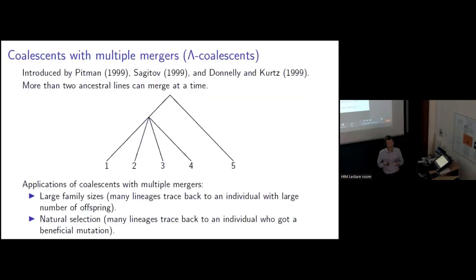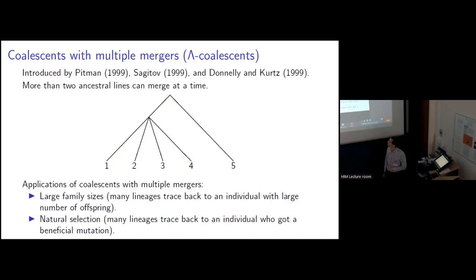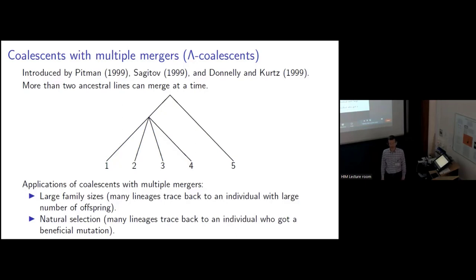Now, Kingman's Coalescent describes the genealogy of populations under a wide range of circumstances. But in other circumstances, one needs to consider a larger class of coalescent processes known as coalescence with multiple mergers, or lambda coalescence. These processes were introduced independently in 1999 by Pitman and Sagitov, and also appeared around the same time in work of Donnelly and Kurtz. These coalescent processes have the property that more than two ancestral lines can merge at a time. So we could get a picture like this one, where lineages one through four all merge at the same time, and then later the last lineage joins them.